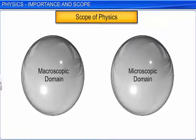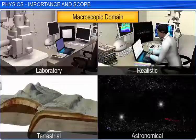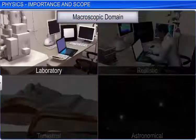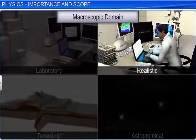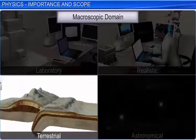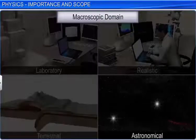The scope of physics can be divided into two major domains that are macroscopic and microscopic. The macroscopic domain deals with phenomena at laboratory, terrestrial, and astronomical scale.